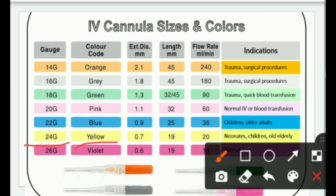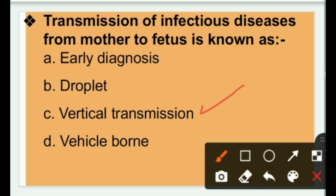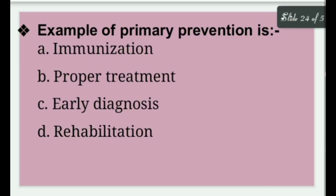Next question: Transmission of infectious diseases from mother to fetus is known as — options are early diagnosis, droplet, vertical transmission, or vehicle-borne. The right answer is option C, vertical transmission. When any infection or disease transmits from mother to child, either through the placenta, through the birth process, or by breast milk, that is termed vertical transmission.